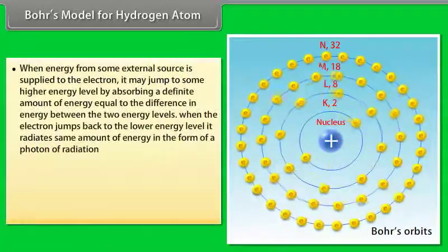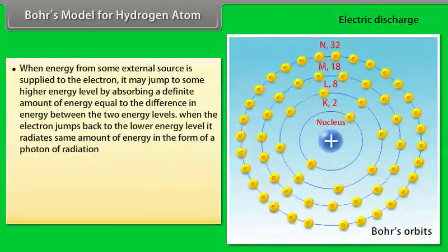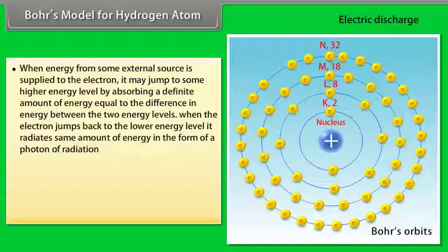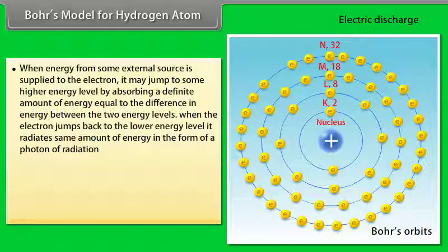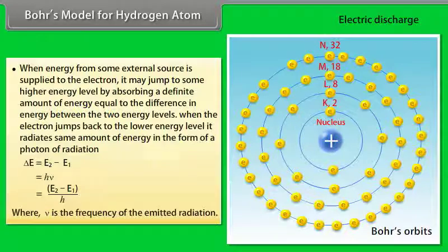When energy from an external source is supplied to an electron, it may jump to a higher energy level by absorbing energy equal to the difference between the two levels. When the electron jumps back to the lower energy level, it radiates the same amount of energy as a photon: ΔE = E₂ − E₁ = hν, so ν = (E₂ − E₁)/h, where ν is the frequency of emitted radiation.